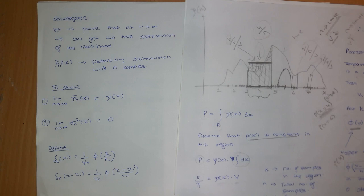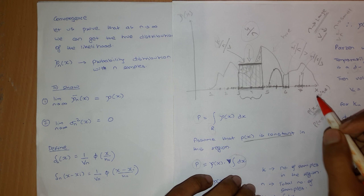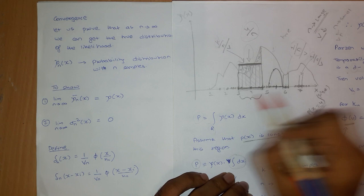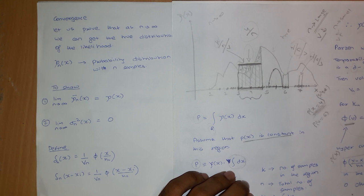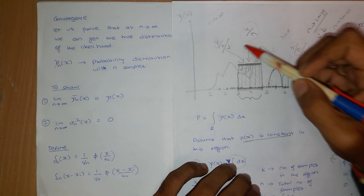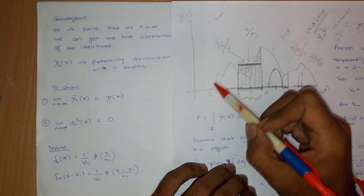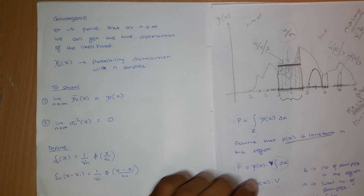Hello guys. In this video, I'm actually going to prove that theoretically, if the number of samples n tends to infinity, I will be able to get the true distribution of the likelihood. So this is the true distribution of the likelihood — if n tends to infinity, I can actually get this distribution theoretically. Let us see how we can prove this.